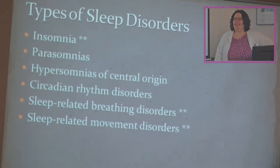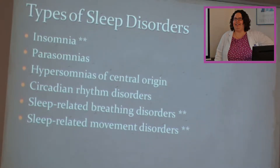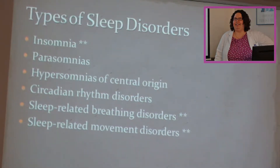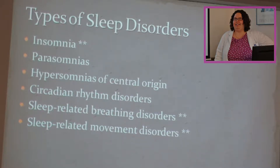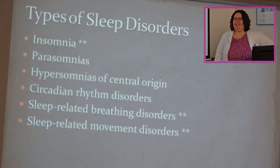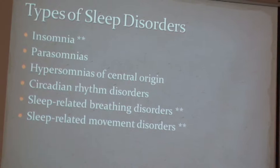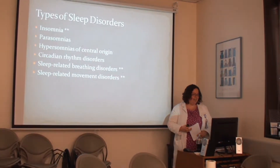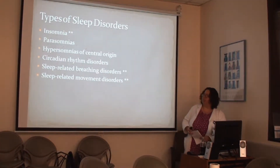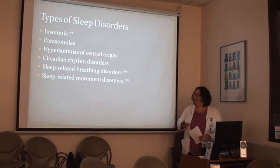The different types of sleep disorders I'll cover today include insomnia — probably the biggest one we see in-house, outpatient, and in nursing homes. Parasomnias relate to arousal from sleep, which I won't cover in depth. Hypersomnia of central origin is more the narcolepsy-type picture — rarer, so I won't discuss it. Circadian rhythm disorder includes jet lag for anyone changing time zones. Sleep-related breathing disorders such as sleep apnea, and movement disorders like restless leg syndrome.